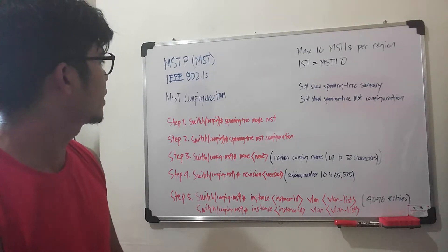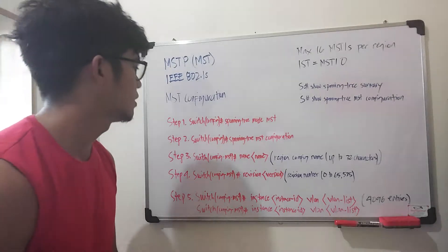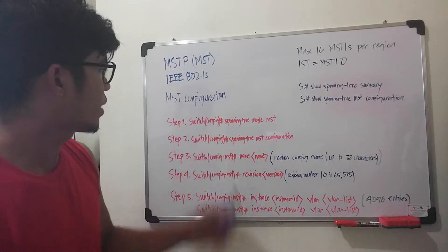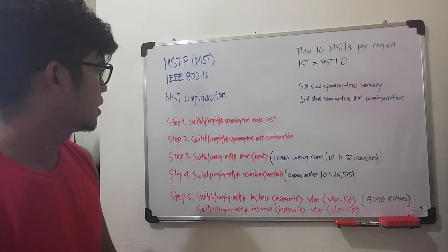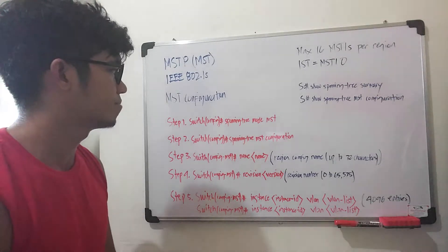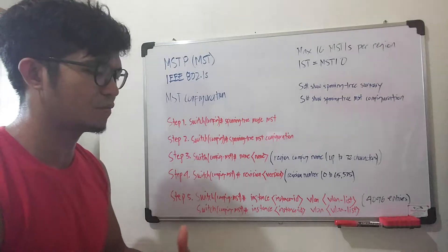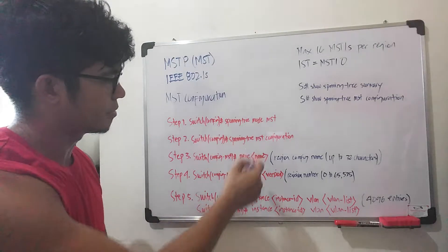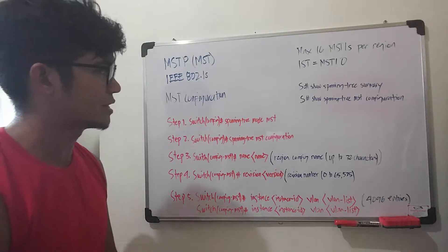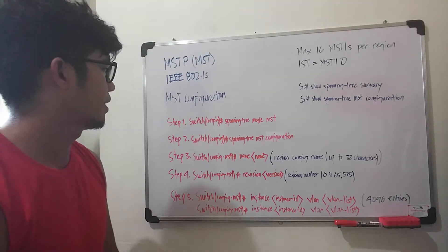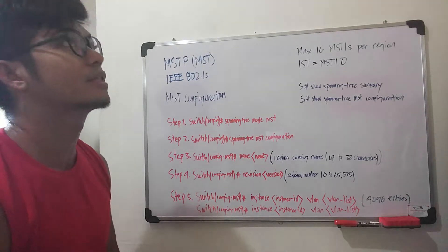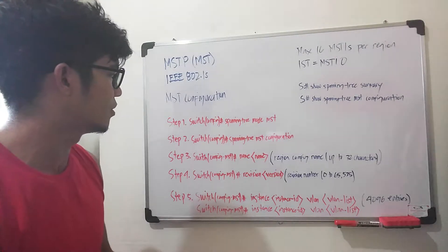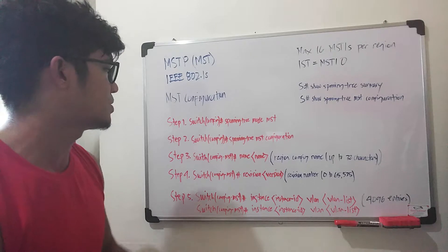Let's talk about its configuration. Step one is you have to enable it like the other flavors of STP. You have to type in the command 'spanning-tree mode MST' to enable it. And then you have to enter the MST configuration.